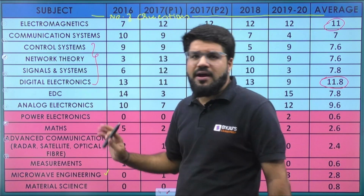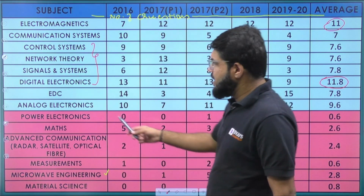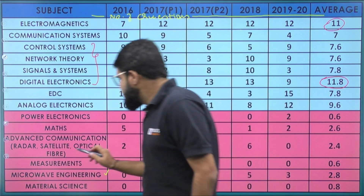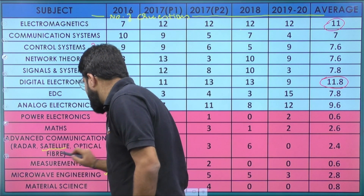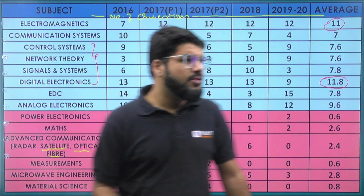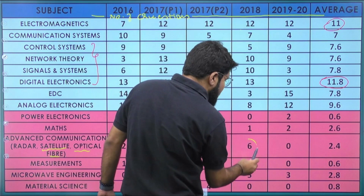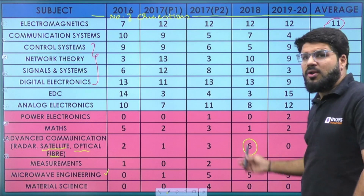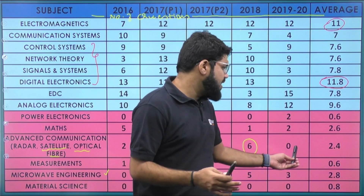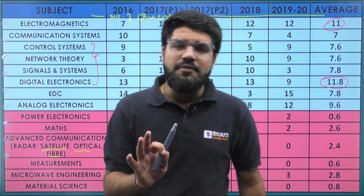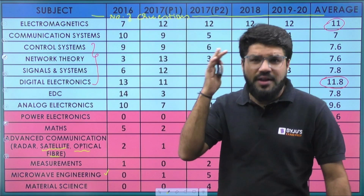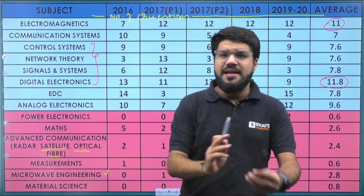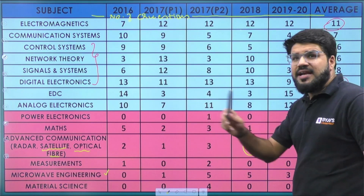For advanced communication, the most important topics are satellite communication and optical fiber. In 2018, all six advanced communication questions were from satellite communication. Although there were none in 2020, that doesn't mean it won't appear again. Satellite communication is something ISRO clearly expects you to know — which makes sense given the organization. Combined with regular communication systems, the overall weightage becomes significant, so do prepare satellite communication thoroughly.